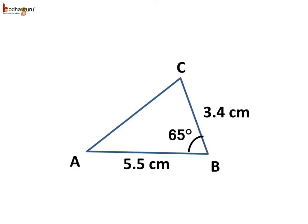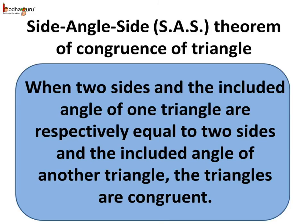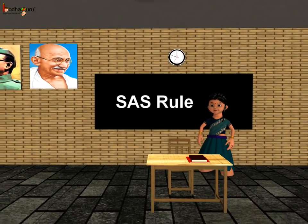We can see the two triangles are congruent. So if the two sides and the angle between them are equal to the corresponding sides and angle of another triangle, then the two triangles are congruent. To remember this rule, remember SAS — Side Angle Side. This is the Side Angle Side, that is the SAS theorem of congruence of triangles: when the two sides and the included angle of one triangle are respectively equal to the two sides and the included angle of the other triangle, the triangles are congruent. That was all about congruency of triangles. Bye bye children.